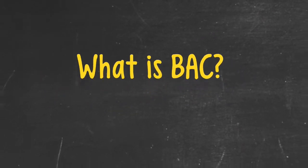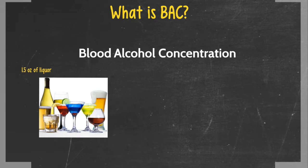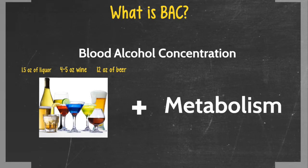What is BAC? BAC is the percentage of ethanol in your blood. Your body can process one standard drink per hour. This is an equation to better visualize how this process happens. You drink one standard drink, which is 1.5 ounces of liquor, 4-5 ounces of wine, and 12 ounces of beer, plus the rate that your body metabolizes alcohol.